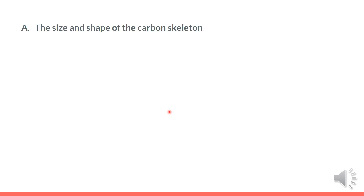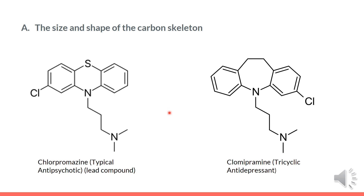The changes from lead compound to one of the analogues may be conveniently classified as changing the size and shape of the carbon skeleton. For example, chlorpromazine acts by blocking dopamine receptors, and while changing the size of one ring to get clomipramine, acts by inhibiting serotonin reuptake.